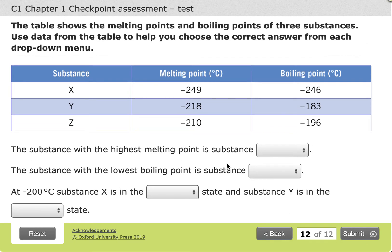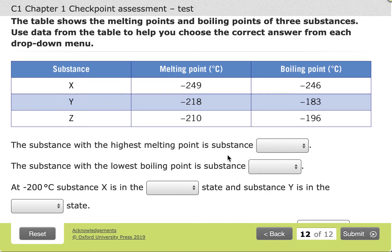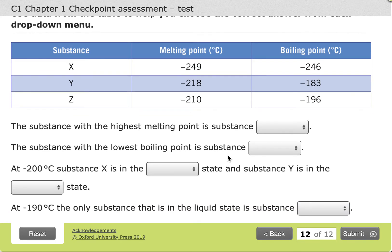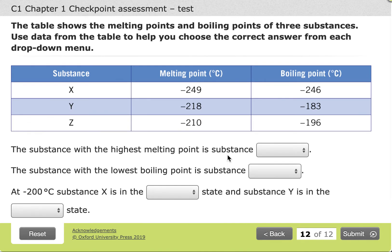Last one, we're looking at a table here. It's going to be quite confusing because we're looking at negative numbers, so be careful when you're looking at this one. We're being asked a few questions about the different substances X, Y, and Z. The first one is the substance with the highest melting point.